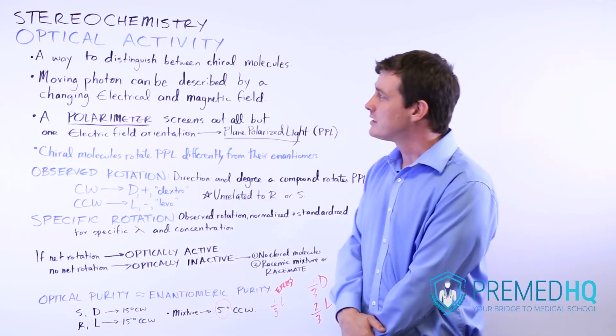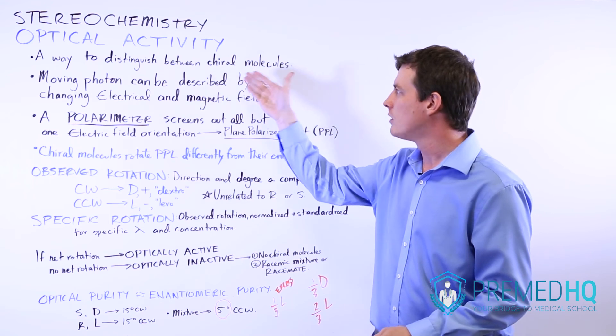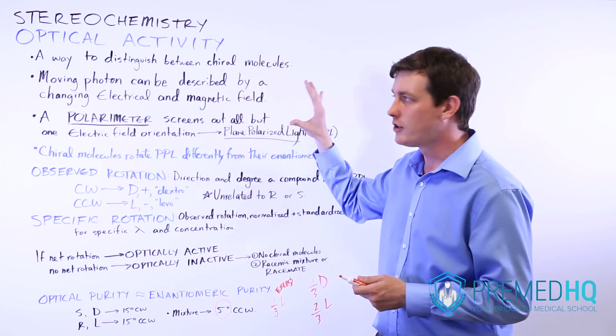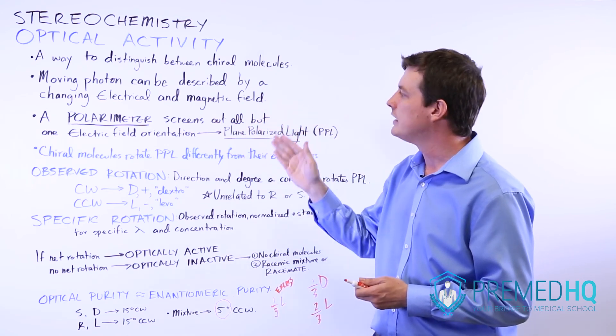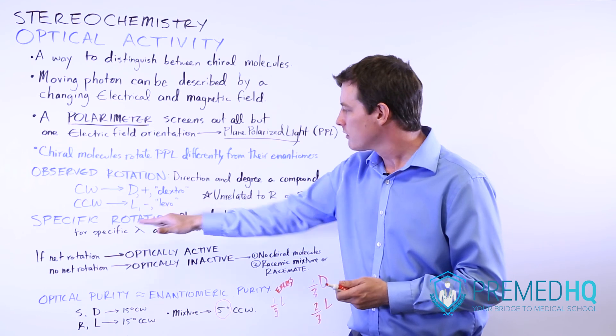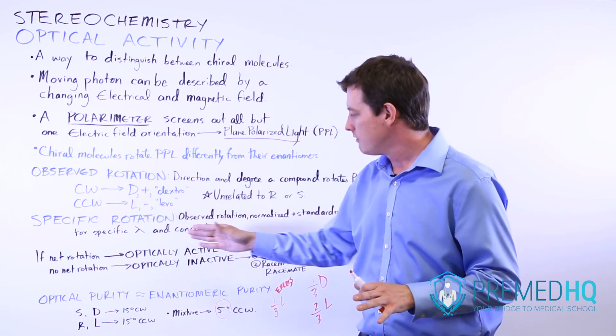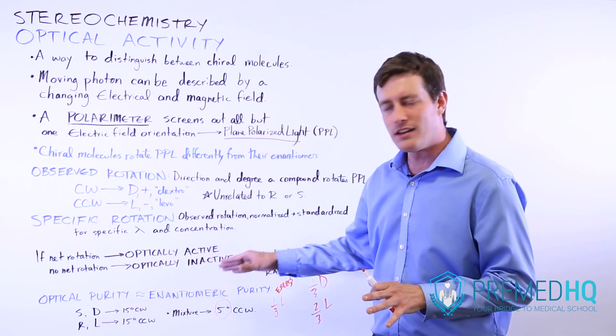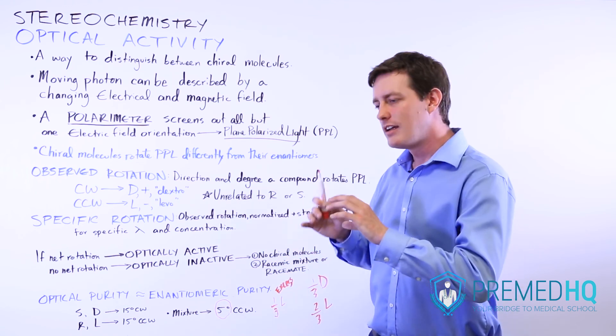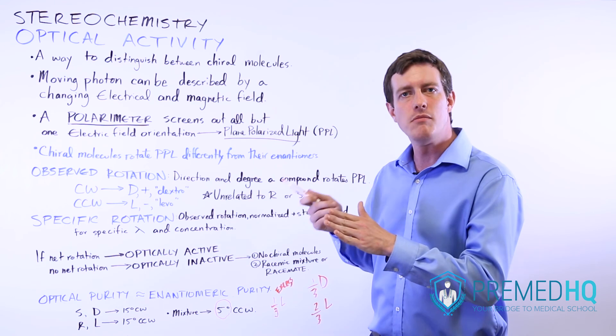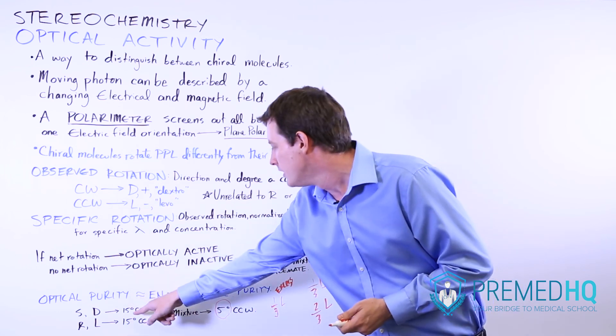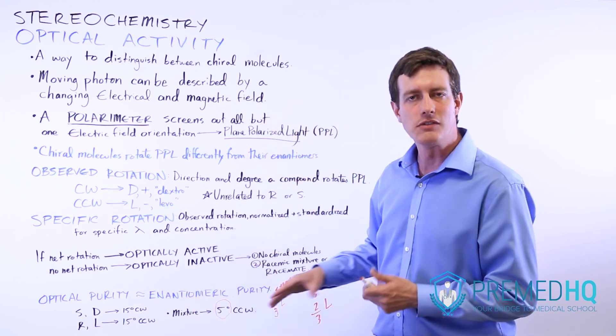The things to remember about optical activity are that they are useful primarily for helping us figure out what different chiral molecules we have, because we can distinguish chiral molecules by optical activity and very few other procedures. Remember that the polarimeter which screens for that plane polarized light lets us observe the rotation. We can get to specific rotation which is normalized, standardized values. The most complicated thing you'll probably see is an optical purity question. The thing to remember is that the net rotation is accounted for by the excess of one of the enantiomeric forms. Anything that isn't part of that excess will be a racemic mixture of both D and L and they will be divided evenly. That will help you do some very difficult looking questions about optical activity by realizing what this means when the net mixture rotates it slightly different than a pure mixture would.